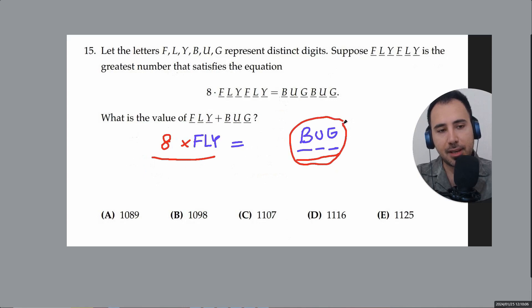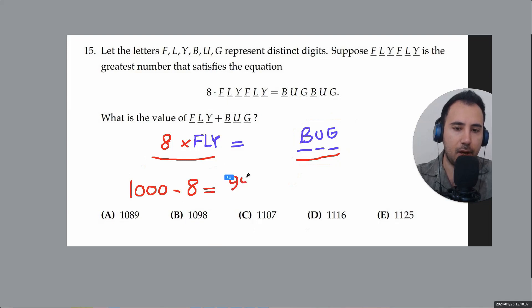...the greatest three digit number that is divisible by eight. We multiply this by eight, so this is divisible by eight. So let's go and find it. We know that a thousand is divisible by eight, because a thousand divided by eight is 125. So how do you find the next number? We just have to subtract it by eight. It becomes nine nine two.